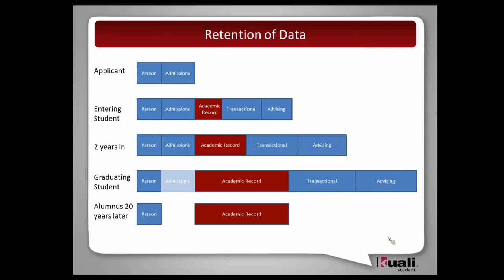If we look at admissions data — what would be the primary operational use of an admissions record 20 years from now? There's nothing I need to do operationally that would require that data. I might have saved the fact that you were admitted and what the decision was, but all of your admissions application data we don't keep anymore. Registration transactions — I don't care 20 years from now what you tried to register for on a particular day. It doesn't matter. And advising is the same. But in contrast, the academic record information is primary operational, because as institutions, from now until perpetuity, we need to be able to respond to requests about what learning experiences the student engaged in and what were their outcomes.